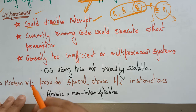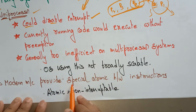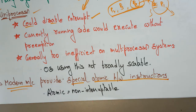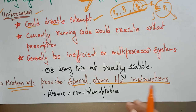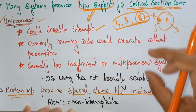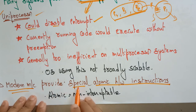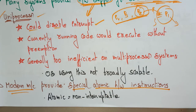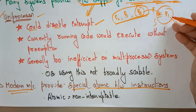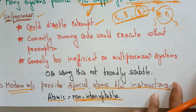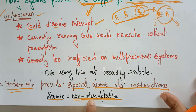So let's take the modern machines. Modern machines provide special atomic hardware instructions. Because they have multiprocessor systems, modern machines provide special atomic hardware instructions to support hardware for the critical section. Atomic means that instruction has to be executed without interrupts — it is non-interruptable.